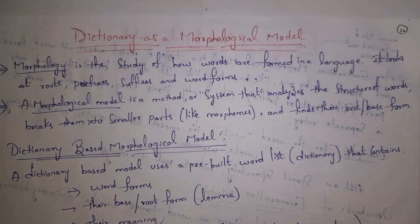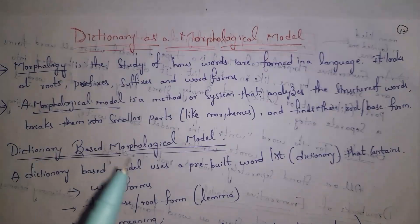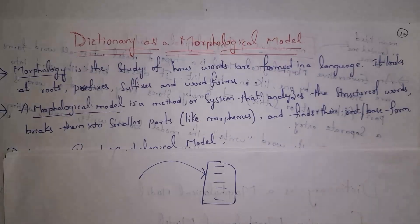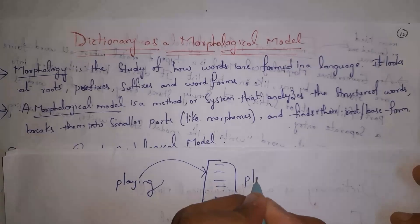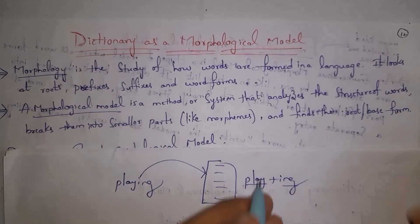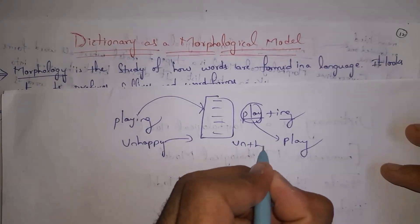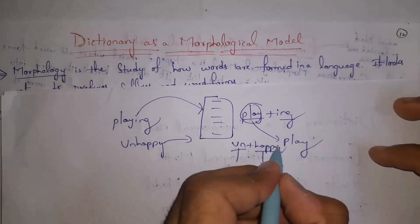Next, what is a morphological model? A morphological model is a method or system that analyzes the structure of words, breaks them into smaller parts called morphemes, and finds the root form. For example, when we give the word 'playing' to the model, it breaks it into 'play' plus 'ing', where each is a morpheme, and identifies 'play' as the root. Similarly, 'unhappy' is broken into 'un' plus 'happy', where 'happy' is the root word.